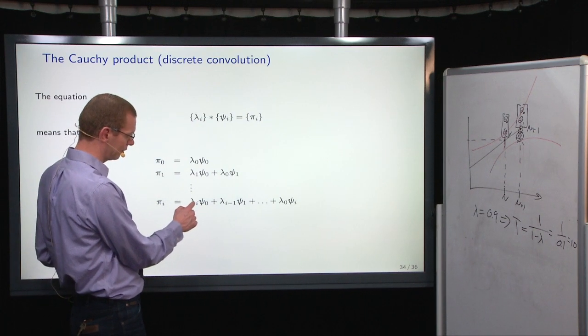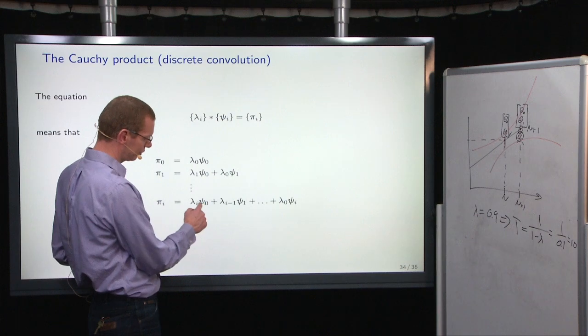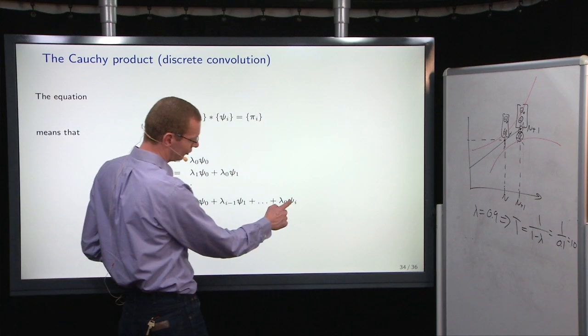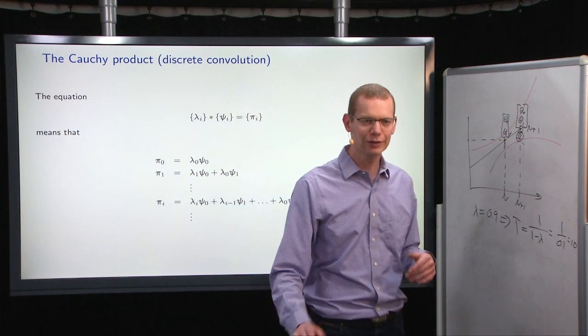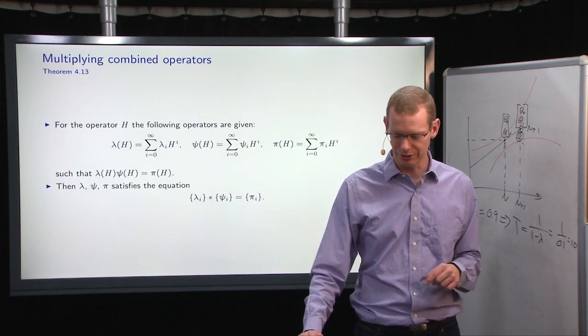So we just start with i and zero, and then we subtract one and add one, until we get to lambda_0 and psi_i. That way we get all the different combinations that we have.